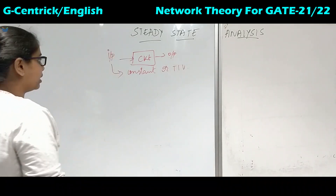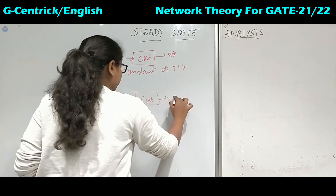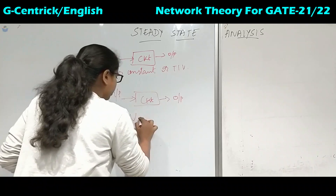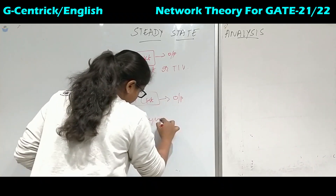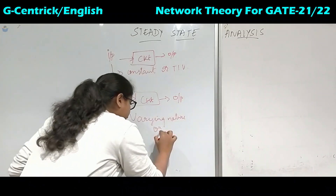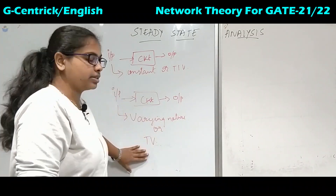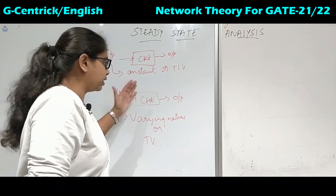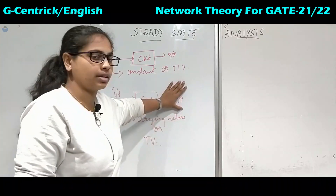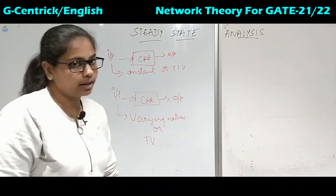But for AC analysis, what will we do? A circuit will be given and we have to find the output. How will the input be? The input will be of varying nature — time variant. So in these input signals we will see time-variant quantities. When we vary the nature of the current or voltage, we will see how the circuit behaves and find the output of that circuit.